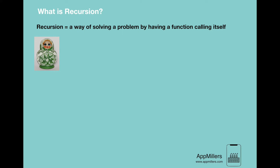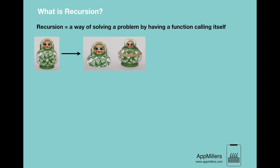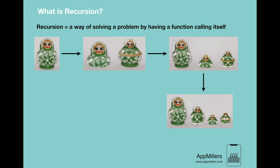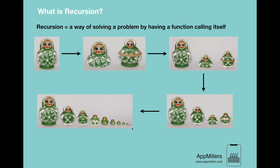If you remove the top half of this doll, you will see another slightly smaller Russian doll inside it. You can remove this doll and again separate its top and bottom halves. Here again you will see another smaller doll. And if we do it once more, you will see another smaller one. A Russian doll is a set of similar dolls inside each other that can be opened.